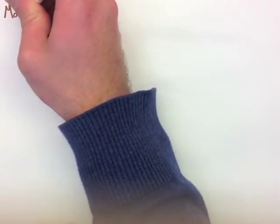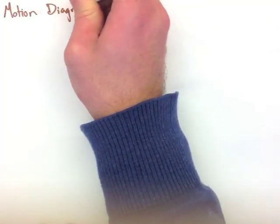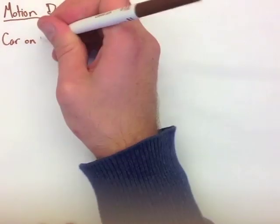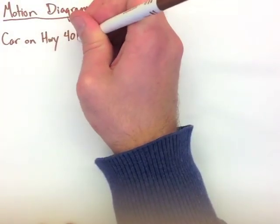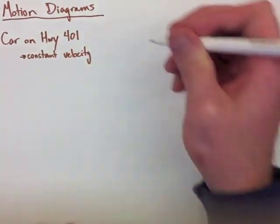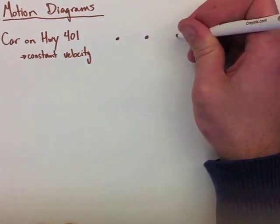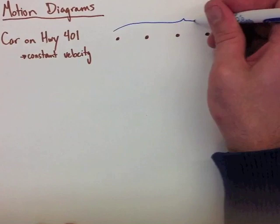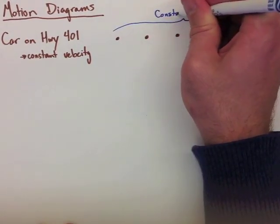We've now looked at calculating both average velocity and acceleration. Now let's look at how we can represent motion diagrams using dots. The first diagram we'll represent is a car on the 401 moving at constant velocity. We're going to represent this by placing our dots equal distance apart as the motion is not changing. As you can see, this represents constant velocity.